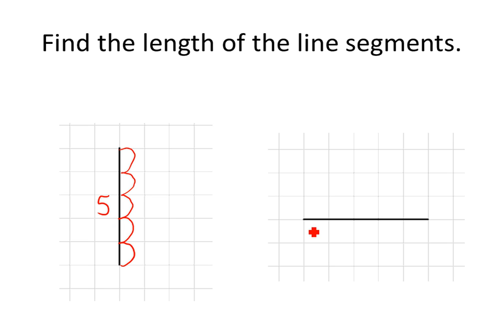Same thing with the horizontal line. You count how many units. One, two, three, four, five. So it's five units long. Very easy.